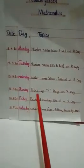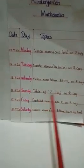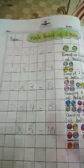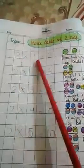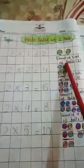Help your child in writing and also learn these number names. 16 April Thursday: table of two. Write the table of two on rough copy. Two ones are two, two ones are two, group of one set of balls two.